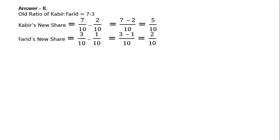Farid surrenders. Farid's new share: 3 by 10 is the old share, minus 1 by 10 is the new share. He is surrendering. That is equal to LCM 10, 3 minus 1 is equal to 2 by 10. Kabir's new share, Farid's new share, and third one is Jyoti's new share.